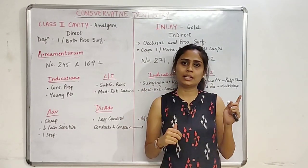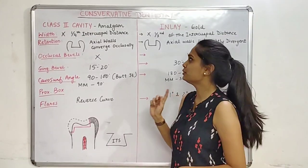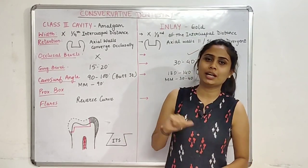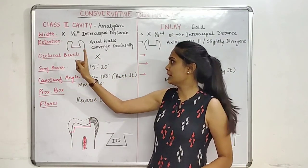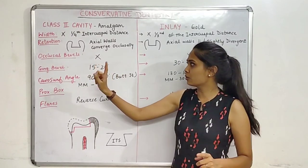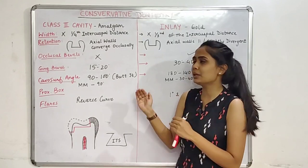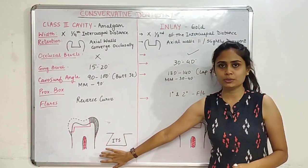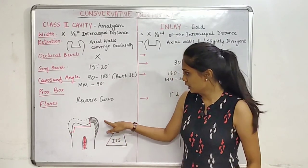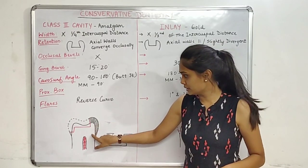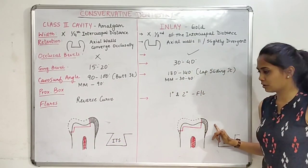That covers the basic differences between the Class 2 cavity for amalgam and the inlay cavity for gold. Next we'll see the technical considerations. We'll cover: width, retention (primary and secondary), occlusal bevels, gingival bevels, cavo-surface angle, proximal box, and flares. This diagram is a cross-sectional slice from the center of the tooth showing enamel, dentine, pulp, and the cavity outline in red.